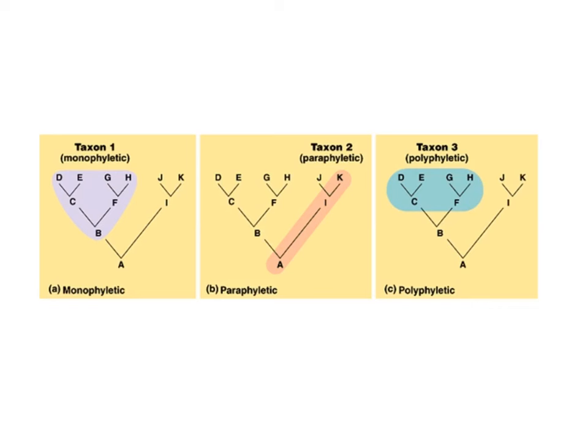A polyphyletic group is a group that does not contain the common ancestor of its members and some or all descendants of that ancestor.